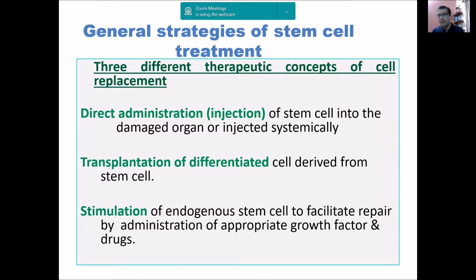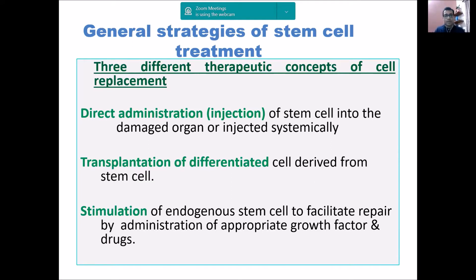We can stimulate endogenous stem cells through growth factors or drugs. One very common example is erythropoietin, which is routinely given in certain hematological diseases. Erythropoietin helps hematopoietic stem cells to be stimulated to divide and differentiate. These are the generalized strategies we use for stem cell therapy.